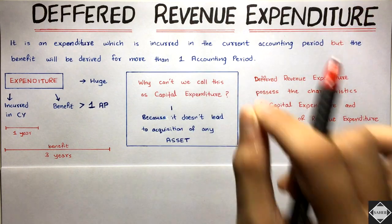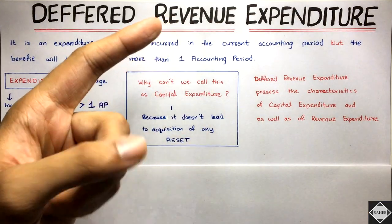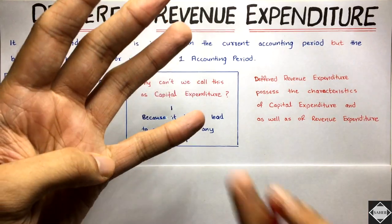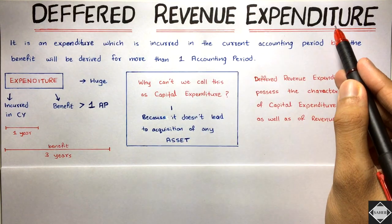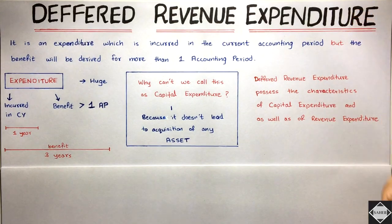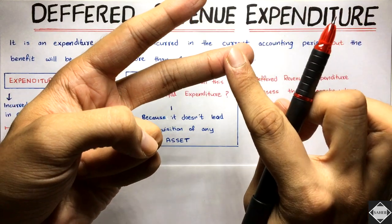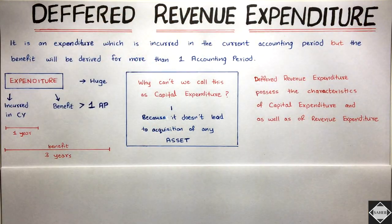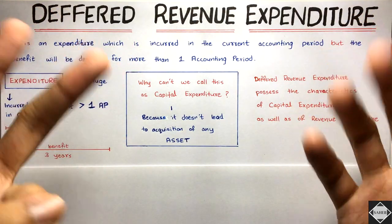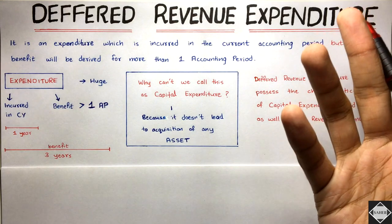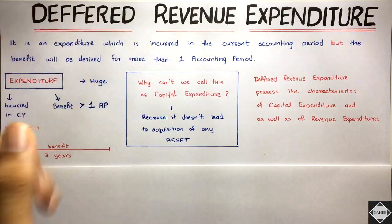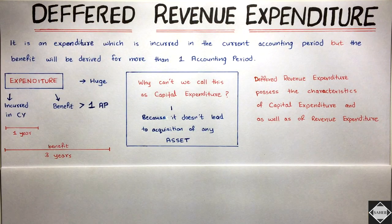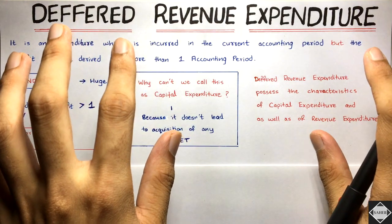Revenue expenditure is an expenditure incurred to run the operations of your business — the salaries you pay, the rent you pay, the commissions you pay to your employees, the discounts you give to your customers. All these normal expenses have a short-term benefit and are incurred on a recurring basis. Exactly opposite to this is capital expenditure, which has long-term benefit and leads to acquisition of assets — like furniture, computers, vehicles, trucks — expanding the earning capacity of your business.